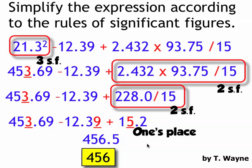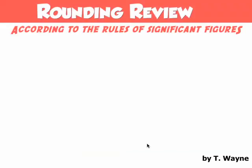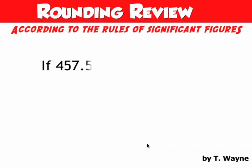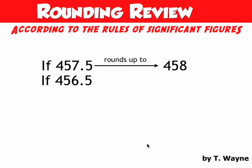Now this is weird because there are rules for rounding with significant figures. So when rounding with significant figures, remember, if it's 457.5, it would round up to 458. If it's 456.5, it would round down to 456.